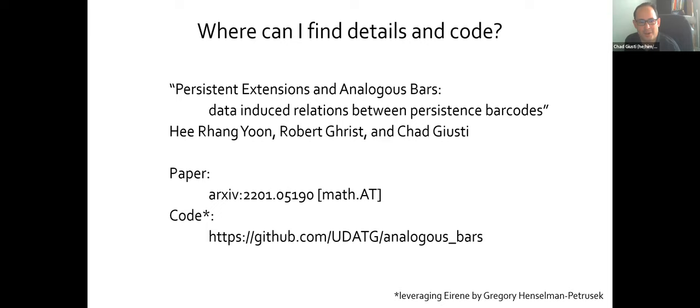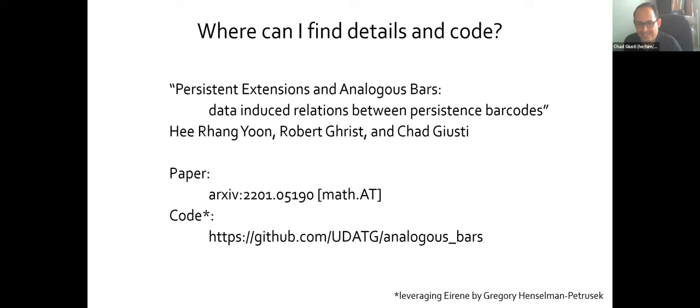Where can I find the details and code? The paper is 'Persistent Extensions and Analogous Bars,' written with Iris Yoon and Rob Greist, on the arXiv and hopefully someday it will appear in print. The code was written heroically by Iris and would not have been possible without Greg Henselman-Petrusevich's Eirene software library, which let us get into the linear algebra really in depth. Ideally there will be a new version in the next six to eight months using the exact library that Greg, Lori, and Haibon have been pushing forward — much more transparent and efficient — but you can do it now on your data using this code.